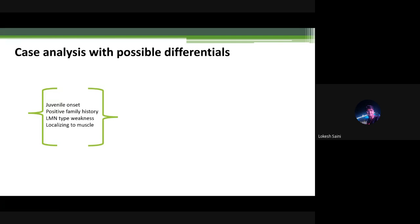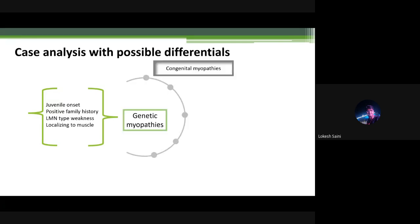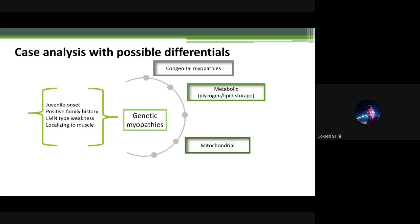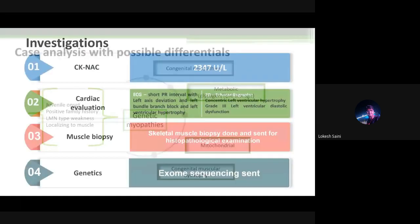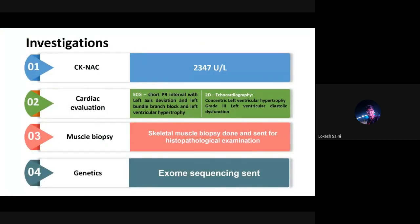Case analysis with possible differentials for juvenile onset with family history, proximal weakness localizing to muscles — differentials kept were: metabolic (glycogen or lipid storage), mitochondrial (rare presentation), congenital myopathies, or congenital muscular dystrophy as a fourth possibility.